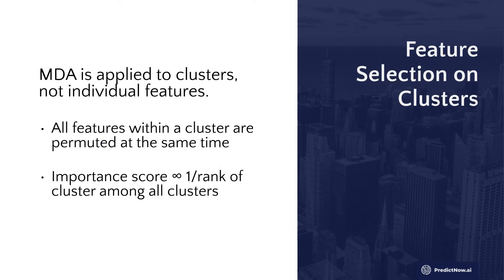Now that you have clustered these features into similar groups, how do you apply MDA? MDA is applied so that all the features within a cluster are permuted together. MDA permutes the rows of features — it randomizes the mapping of the feature to a label — but this random permutation is now applied to all the features in a cluster at the same time. Imagine a spreadsheet where columns are different features and rows are different samples. All the columns within a cluster are glued together; when you permute them, all those columns move in the same way. That's how cluster-based feature selection works.